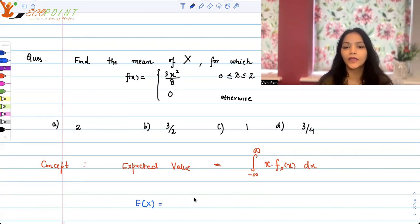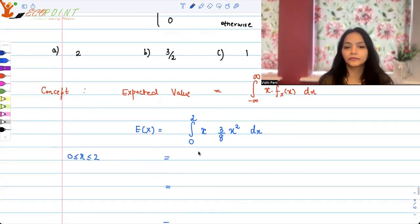Here in our case, since the domain of x is 0 to 2, it's going to be 0 to 2, x multiplied by f(x) which is 3/8 x² dx. So area under this curve. For us it is between 0 to 2.